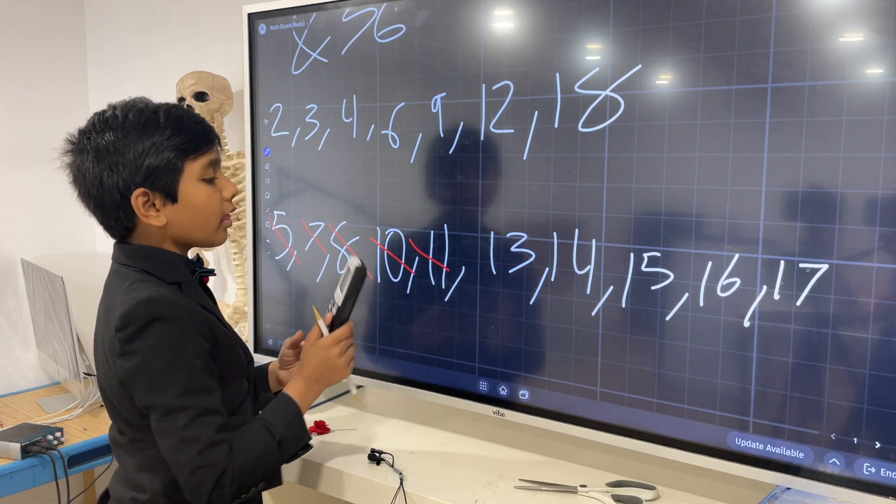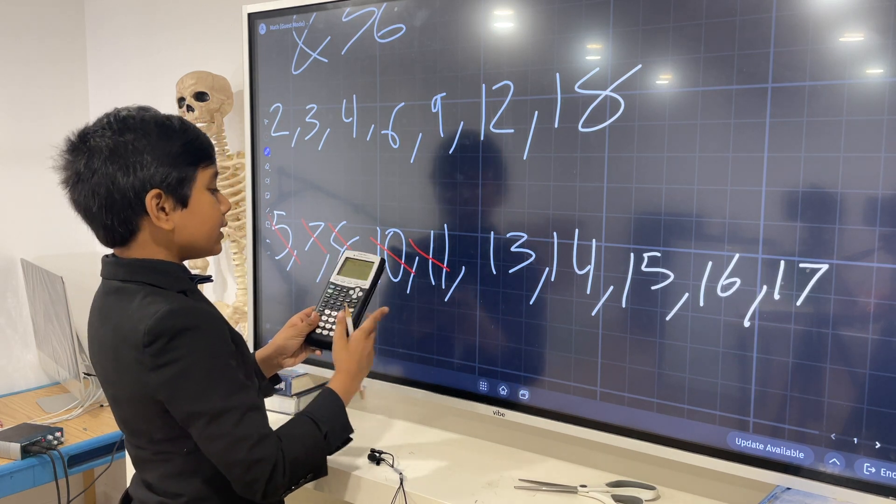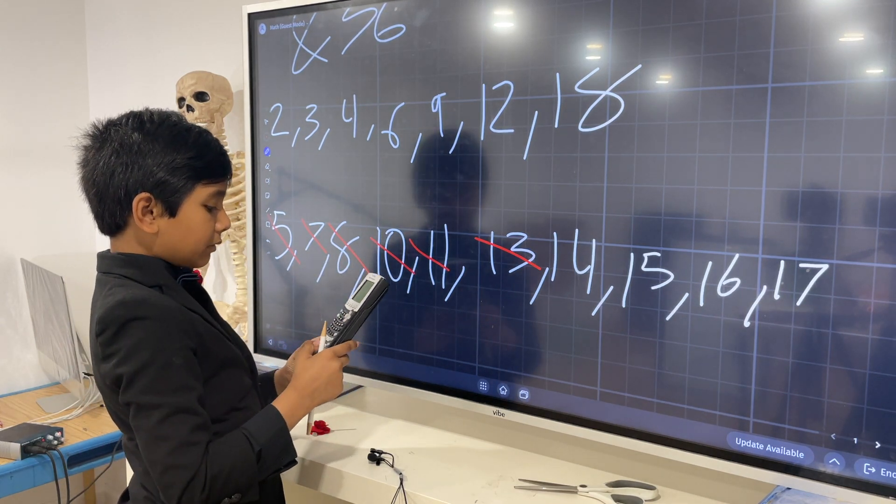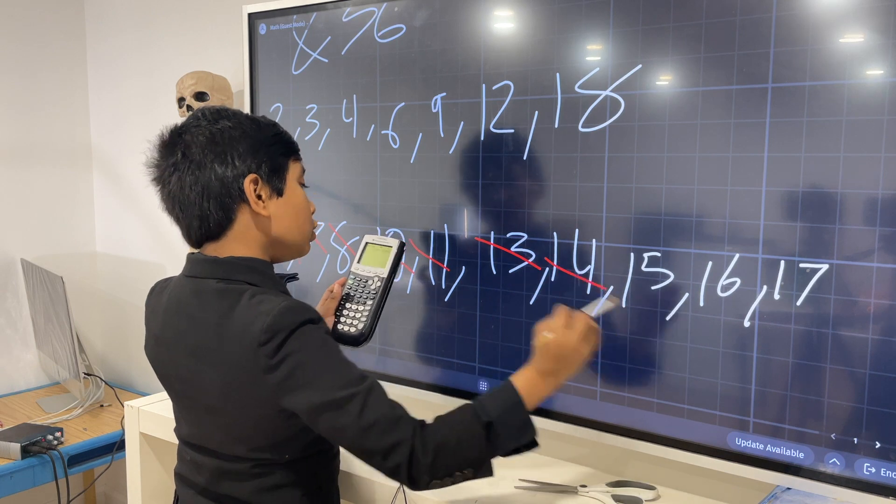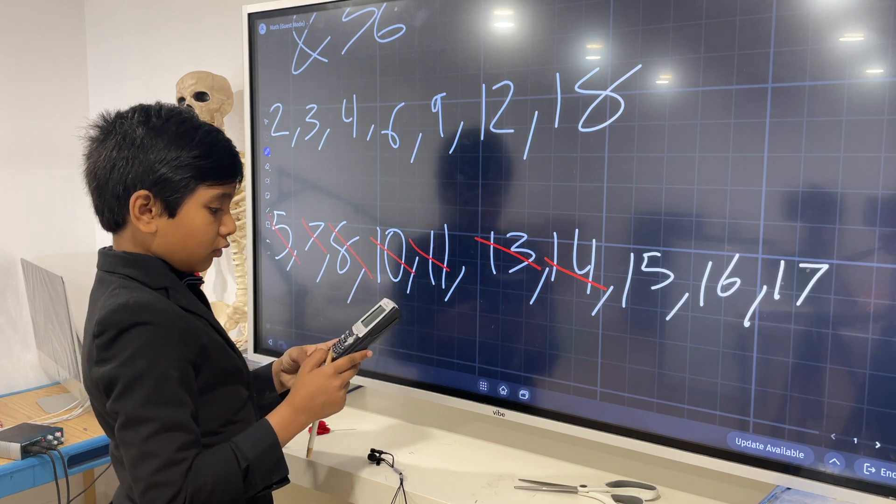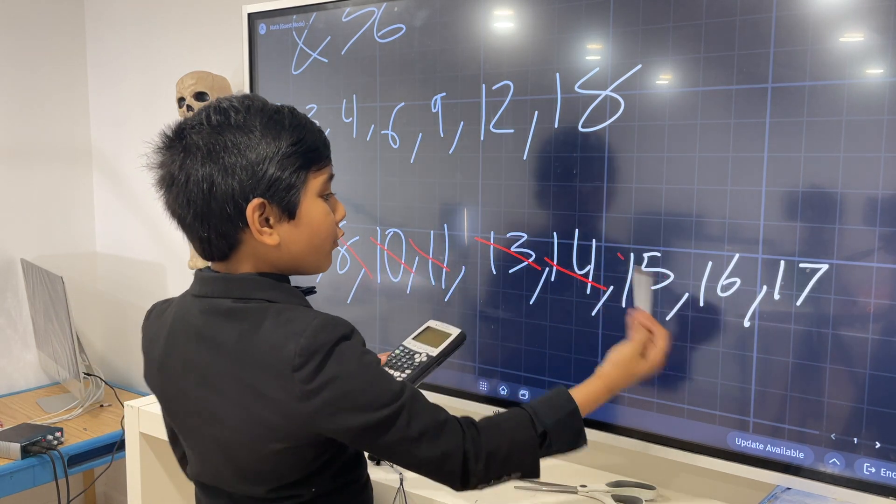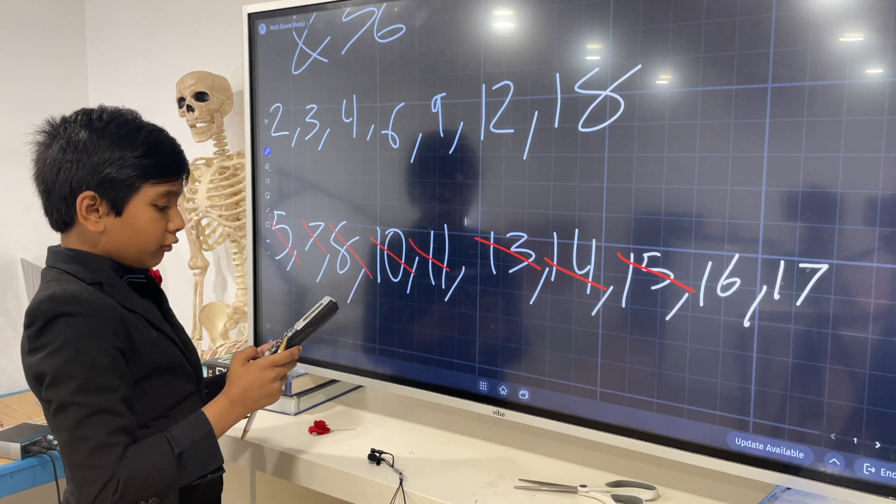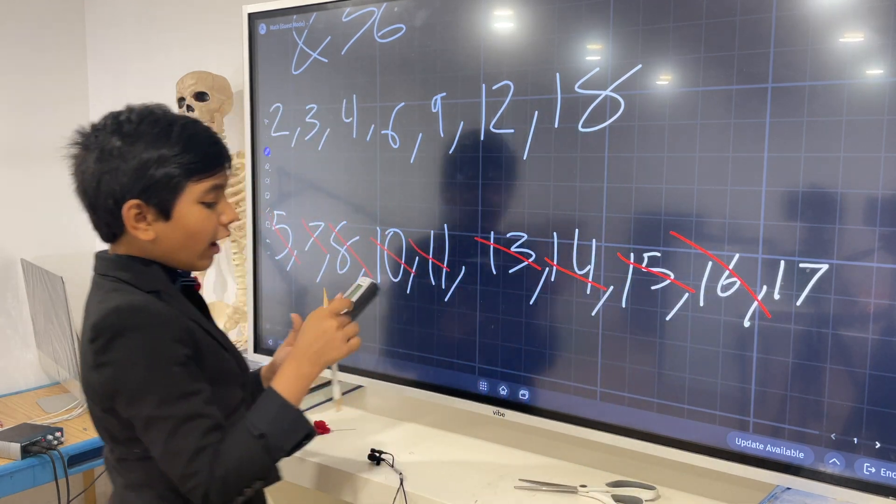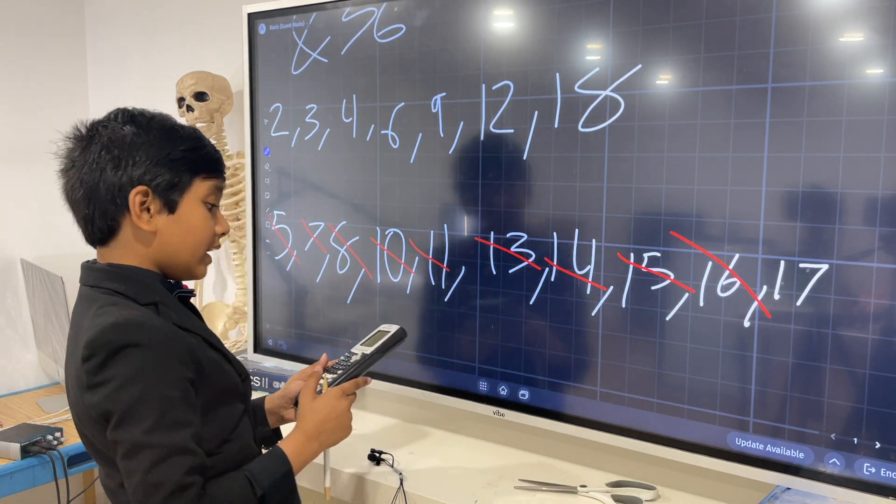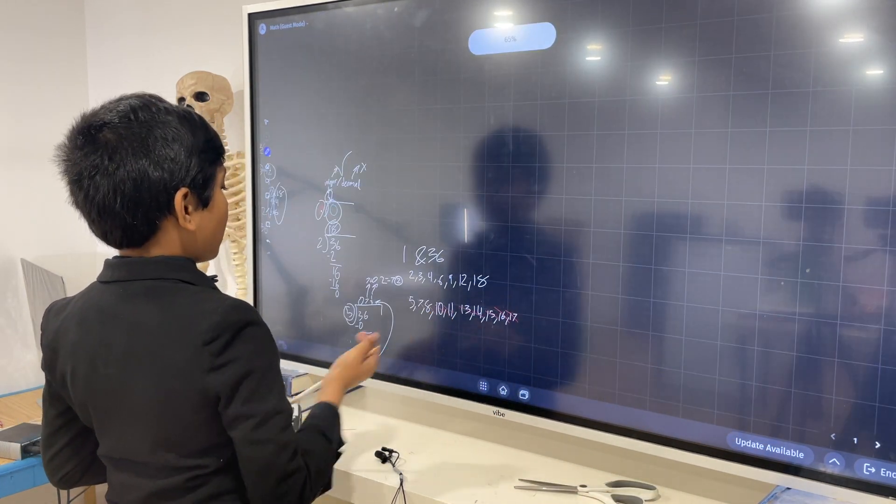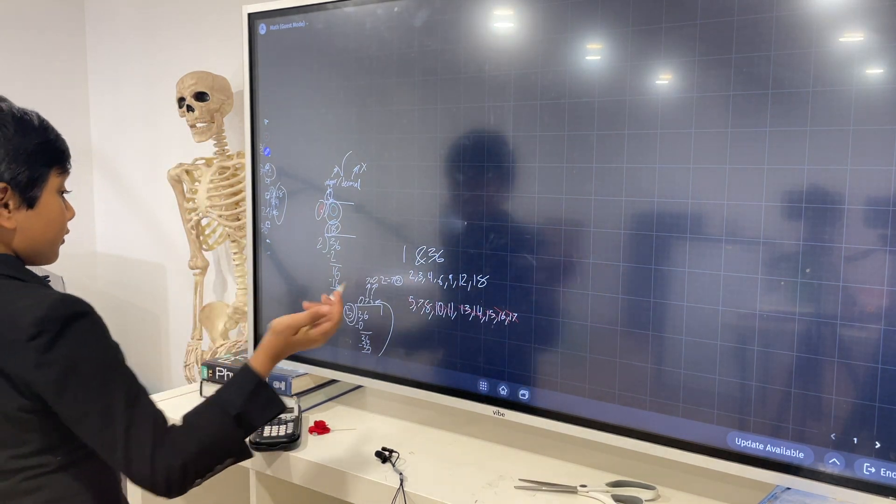36 divided by 11 is out of the game. 3.277 is out. Then we have 36 divided by 13, which is also out of the game, with 2.769. Then we have 36 divided by 14, which is also out of the game, with 2.5714. Then we have 36 over 15, which, with 2.4, is also out of the game. Wow, we're really eliminating contestants today. 36 over 16 is 2.25. And 36 over 17 is, as you guessed, also out of the game. So it looks like we've eliminated all of our contestants.